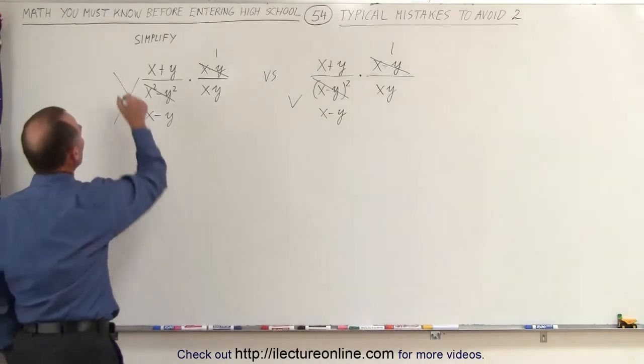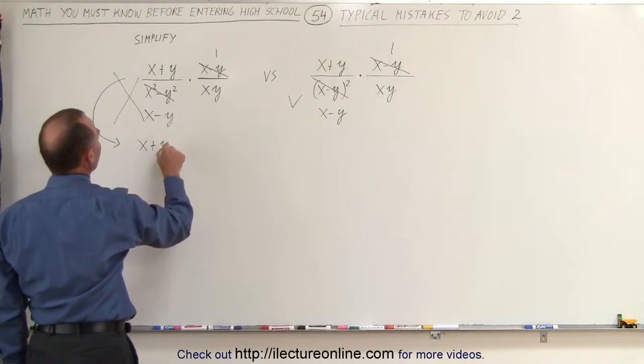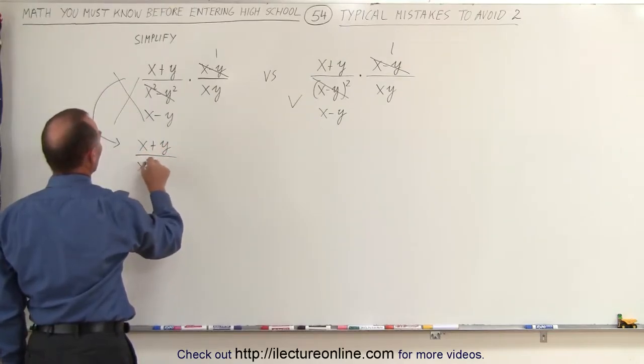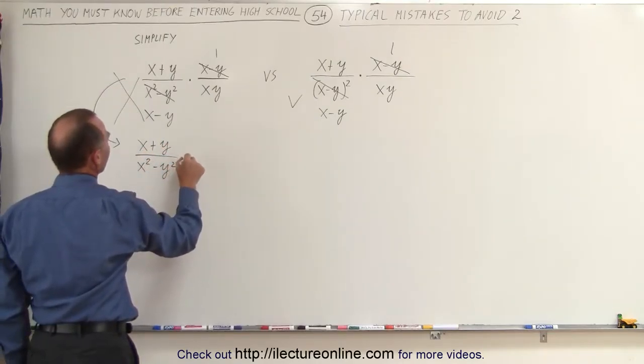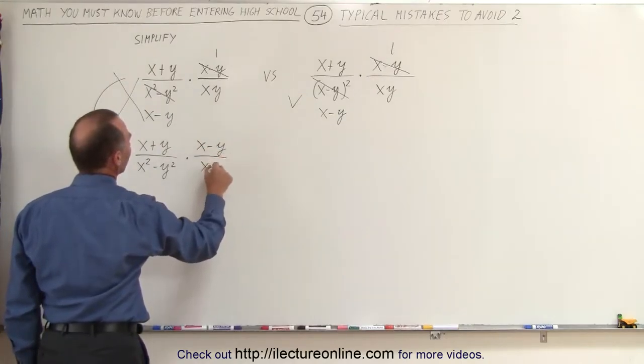Instead, what we should do, let me rewrite the problem. Here we have an x plus y divided by x squared minus y squared times x minus y divided by x times y.